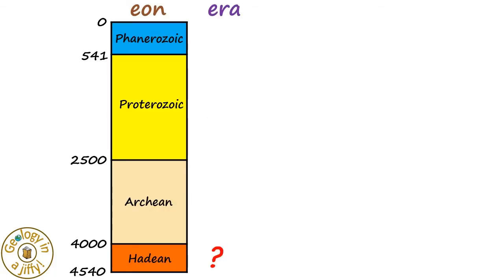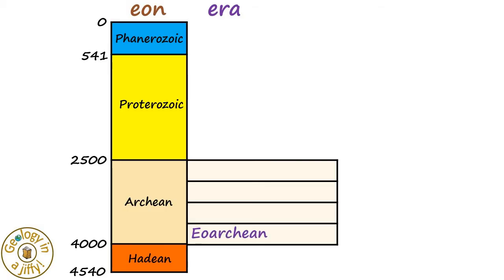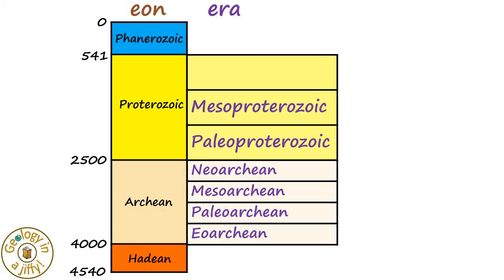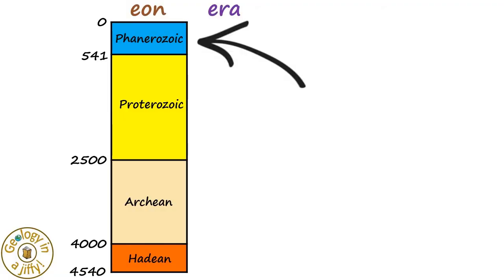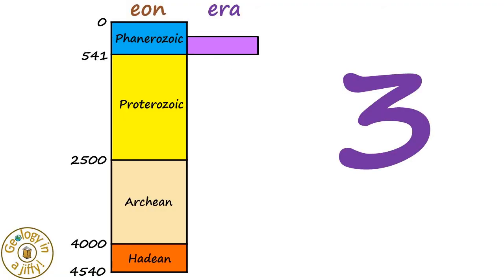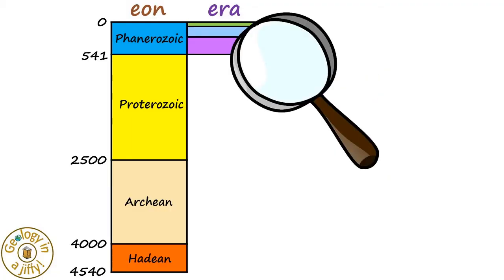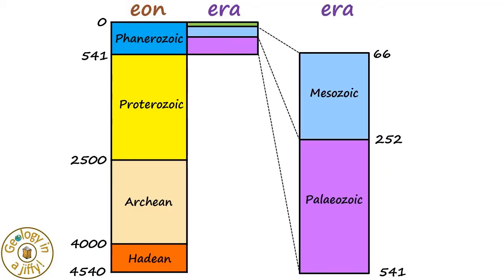Eons are divided into smaller time intervals known as eras. The Hadean has no eras due to the lack of rocks from that eon. The Archean and Proterozoic eons are both subdivided into four and three eras respectively. The Phanerozoic is divided into three eras — from oldest to youngest: the Paleozoic, the Mesozoic, and the Cenozoic — their boundaries defined by very major events in Earth's history.